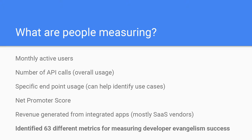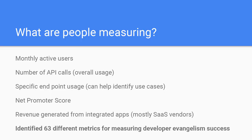I've been speaking with a lot of developer programs and asking what people are measuring. Monthly active users is quite common. Number of API calls demonstrates overall usage. Some people are measuring specific endpoint usage, which lets them identify the use cases developers are having with their APIs. Net promoter score is a big one — you see it more from companies moving to IPO or on the public market, because that's something their boards and shareholders understand.